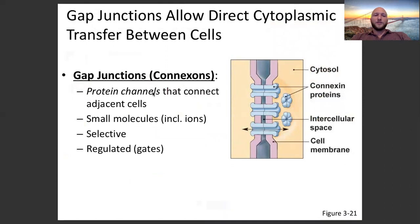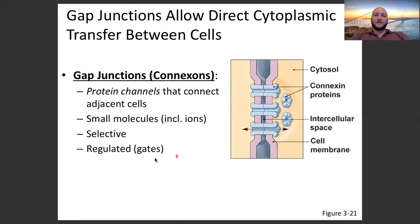Gap junctions are protein channels that physically connect neighboring cells. Small molecules, including ions, can move through them. They are selective — different ones allow different molecules through — and they can have gates that regulate whether they are open or closed. We'll see these in heart cells and in our central nervous system in a specific situation.